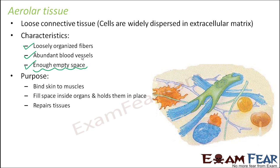Where do we find areolar tissue and what is its purpose? It binds skin to muscles. Bones are connected to bones, bones are connected to muscles, and now muscles get connected to skin — creating an interconnection between everything. These tissues are strong enough to bind tissues yet soft enough to provide flexibility and cushioning. They fill the space inside organs and hold them together, are most widely found in vertebrates, and also help in tissue repair.